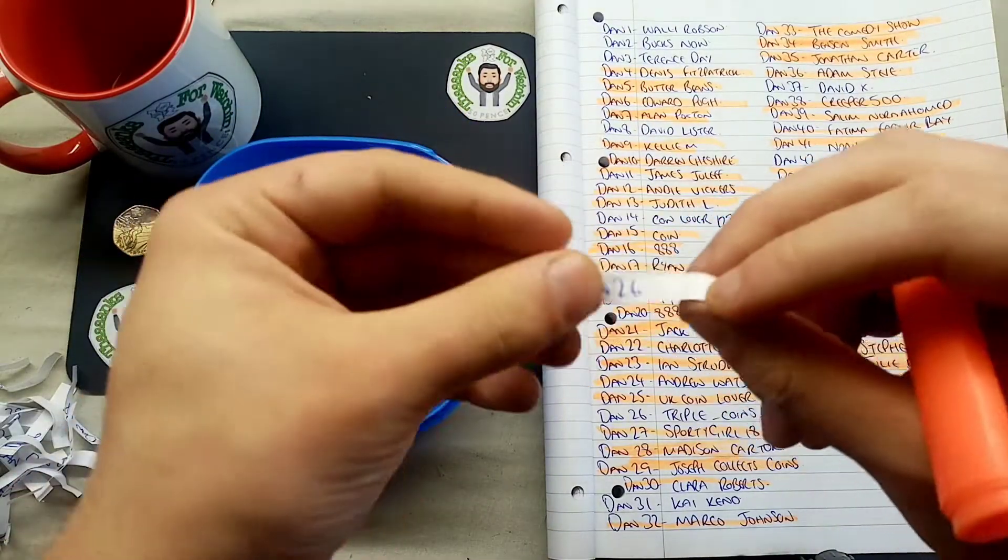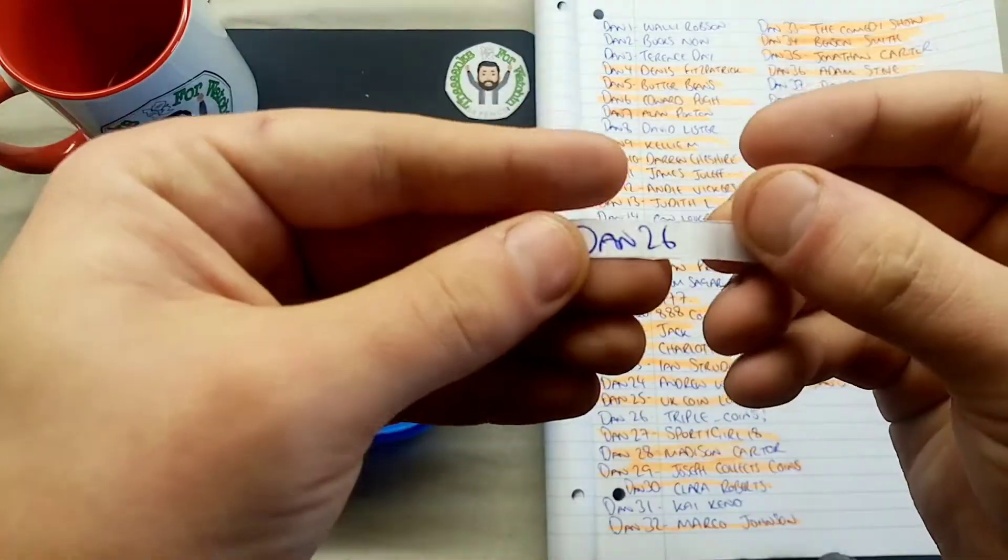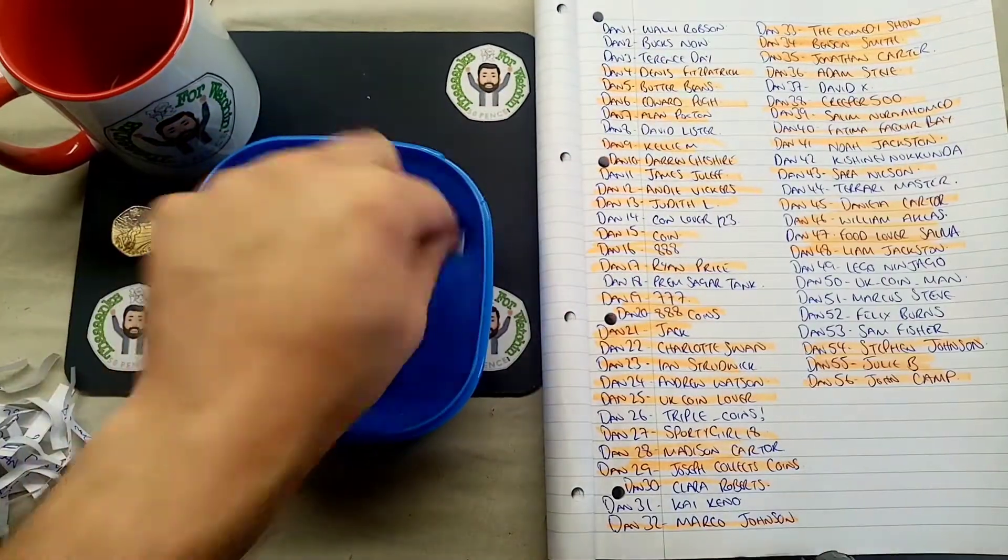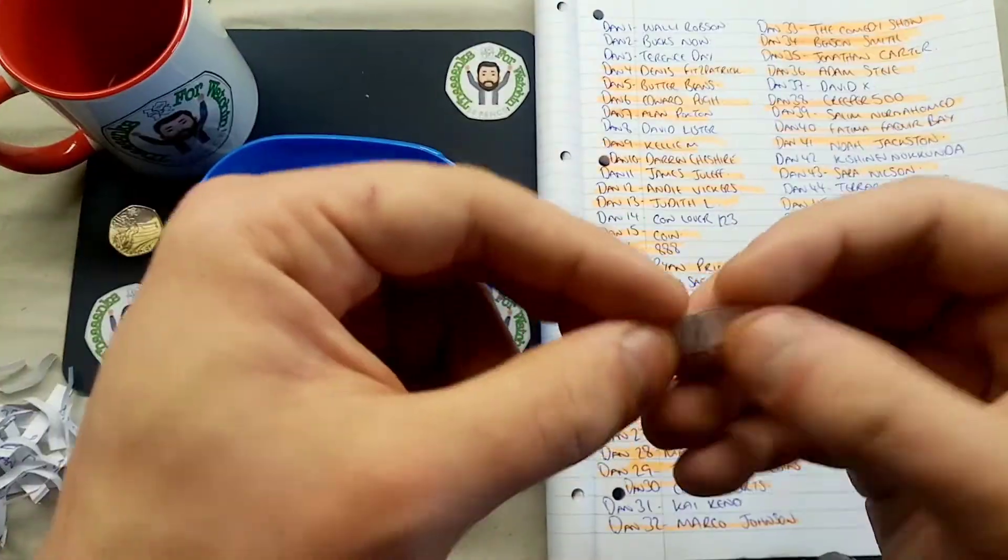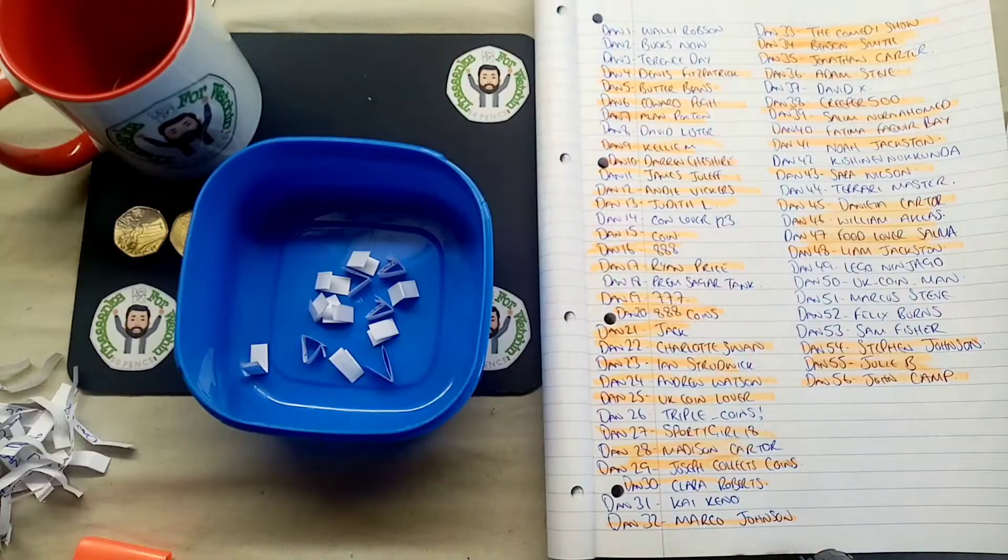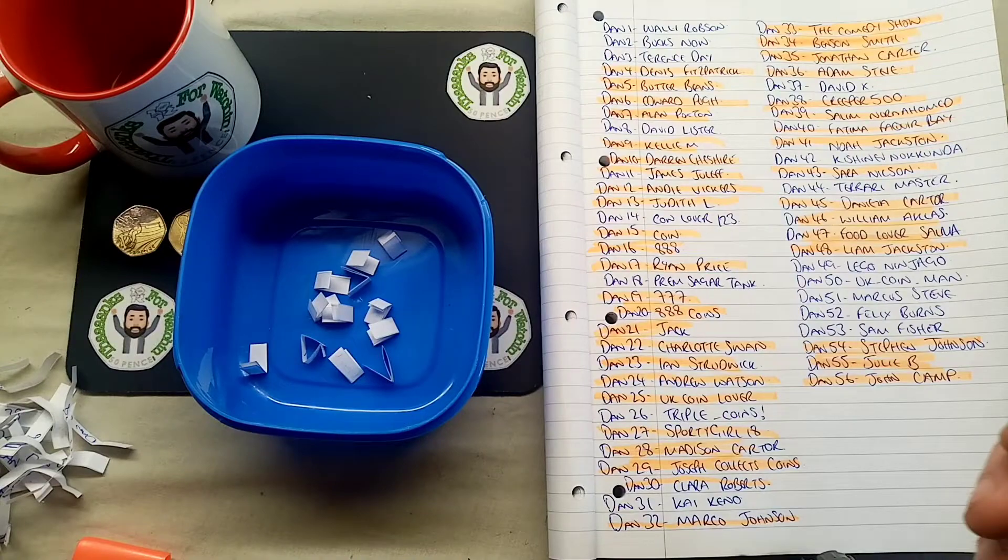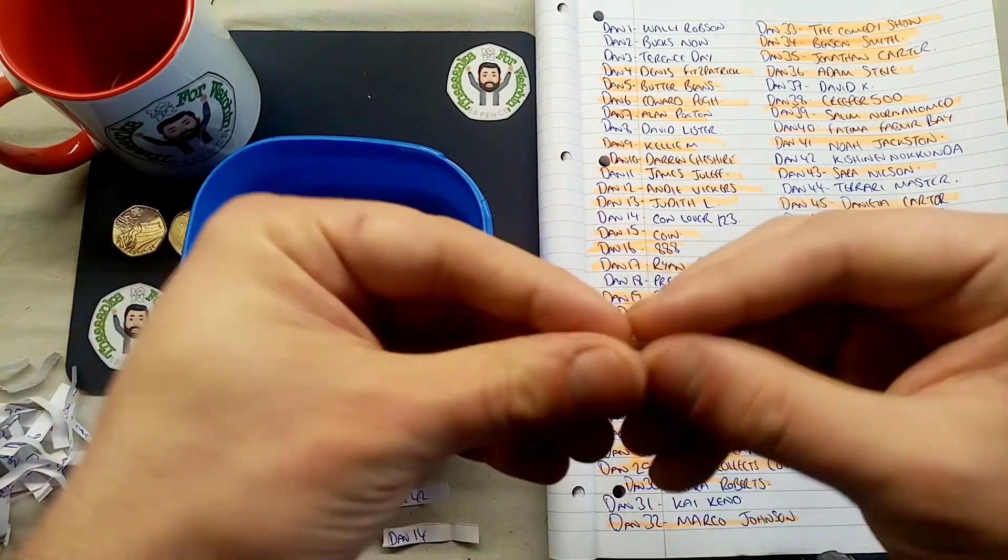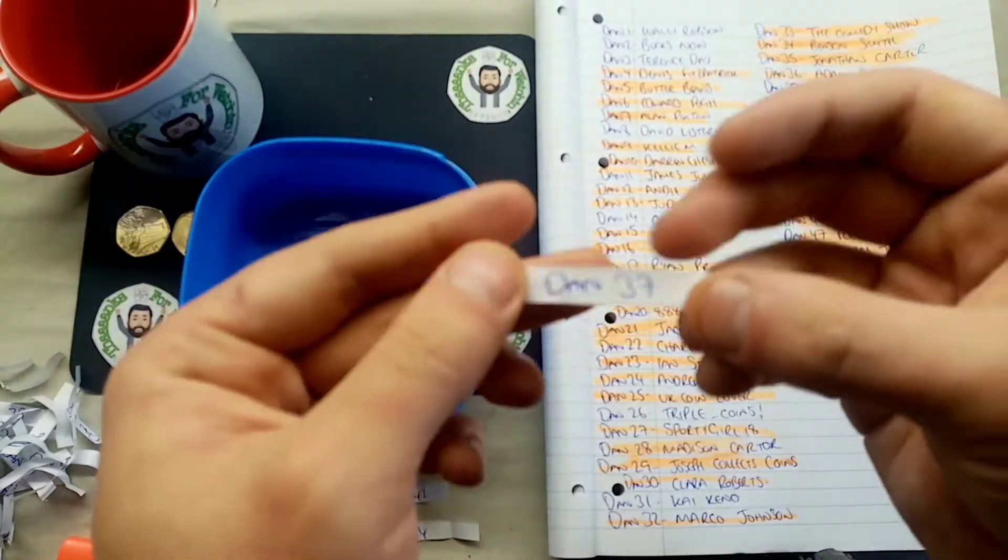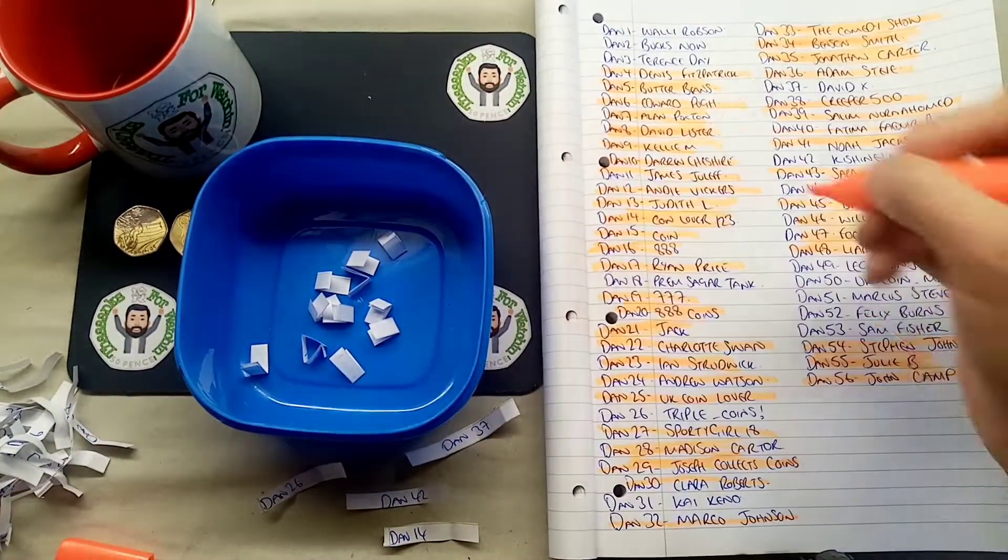The next round then. We have got Dan number 26. That is unfortunately the end there of triple coins. The next one out is going to be Dan number 42. That's going to be the end of Kishnev. Dan number eight is next. That's David Lister. The next Dan out is Dan number 14. That's going to be Coin Lover 123. And we're going to get one more in this round. We've got Dan number 37. Which is going to be the end there of David X.